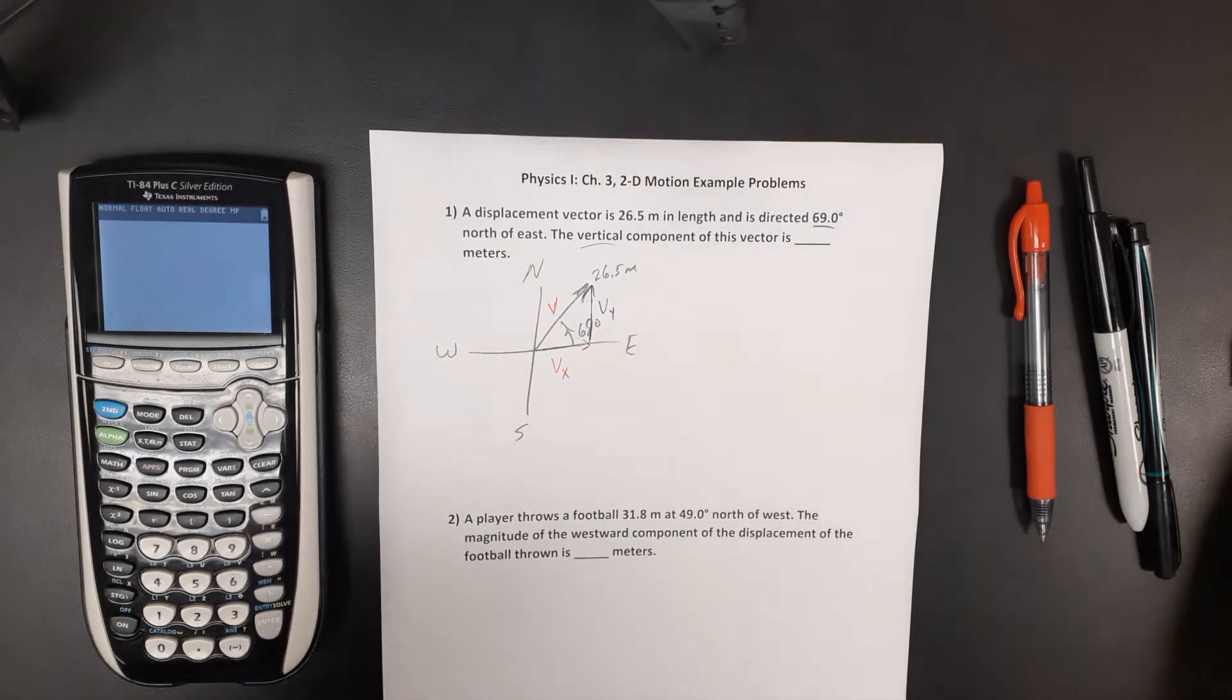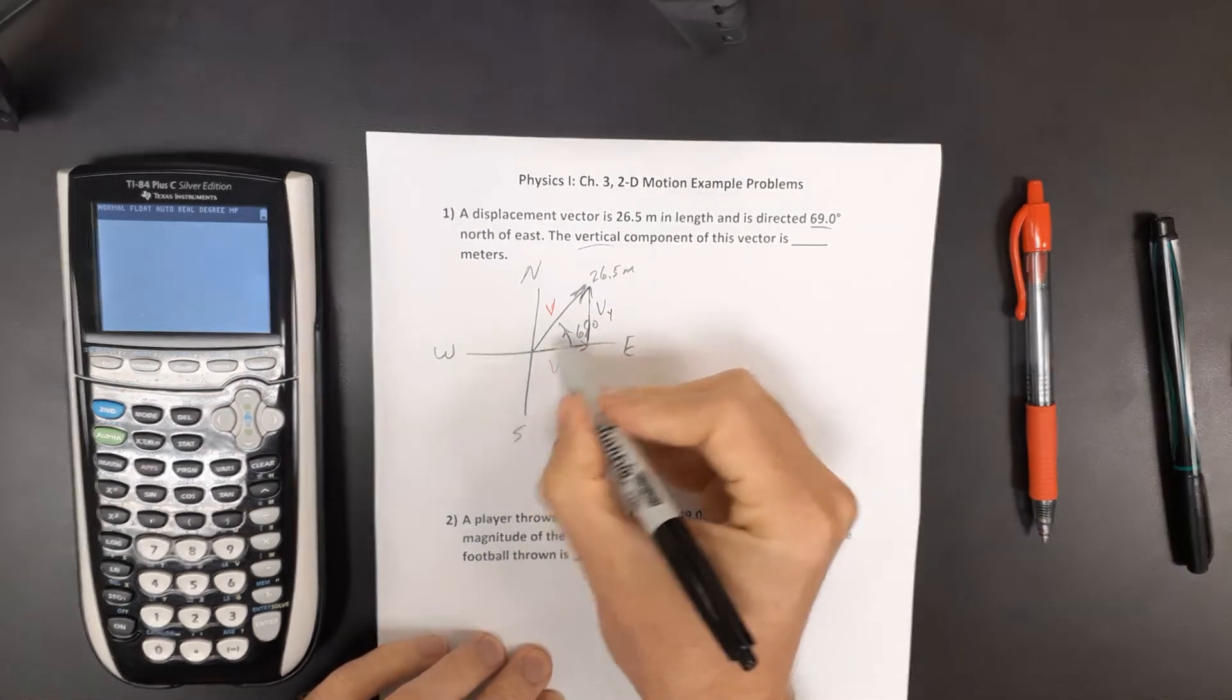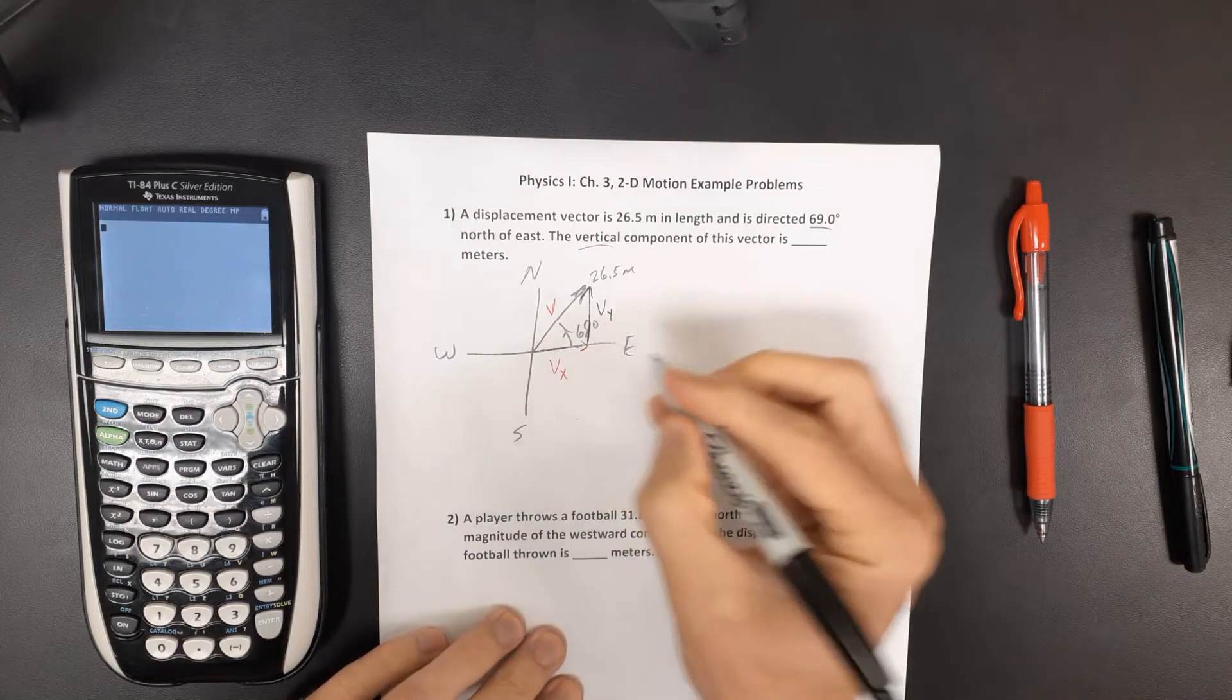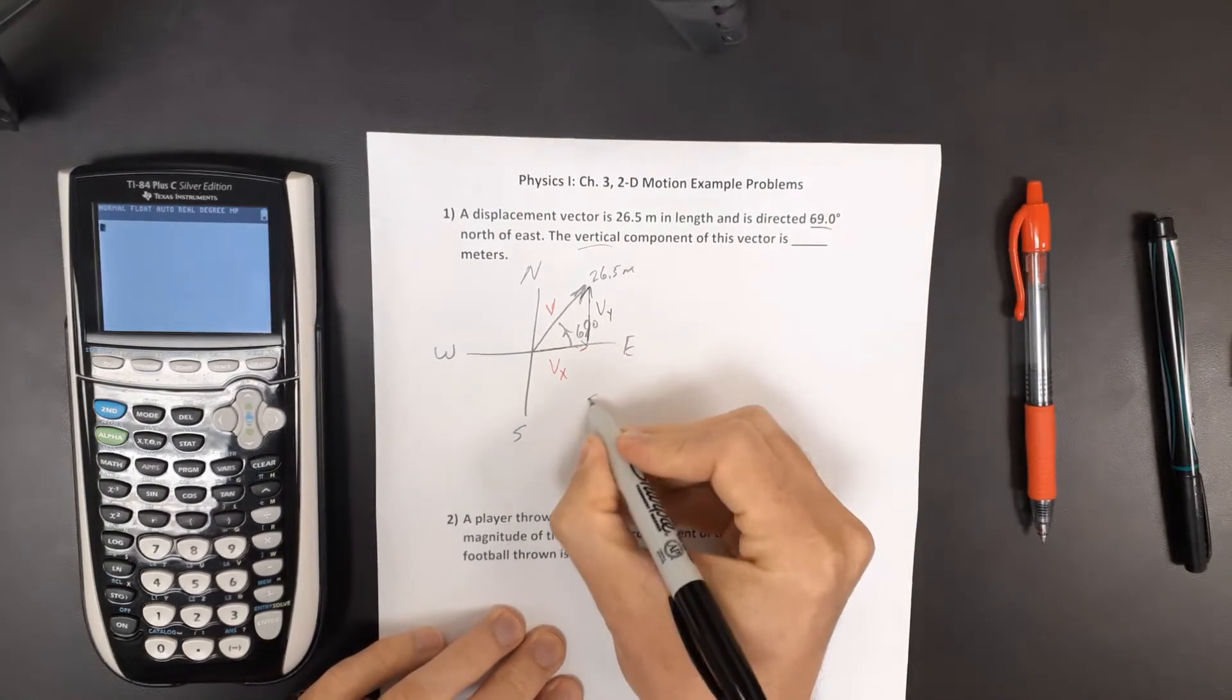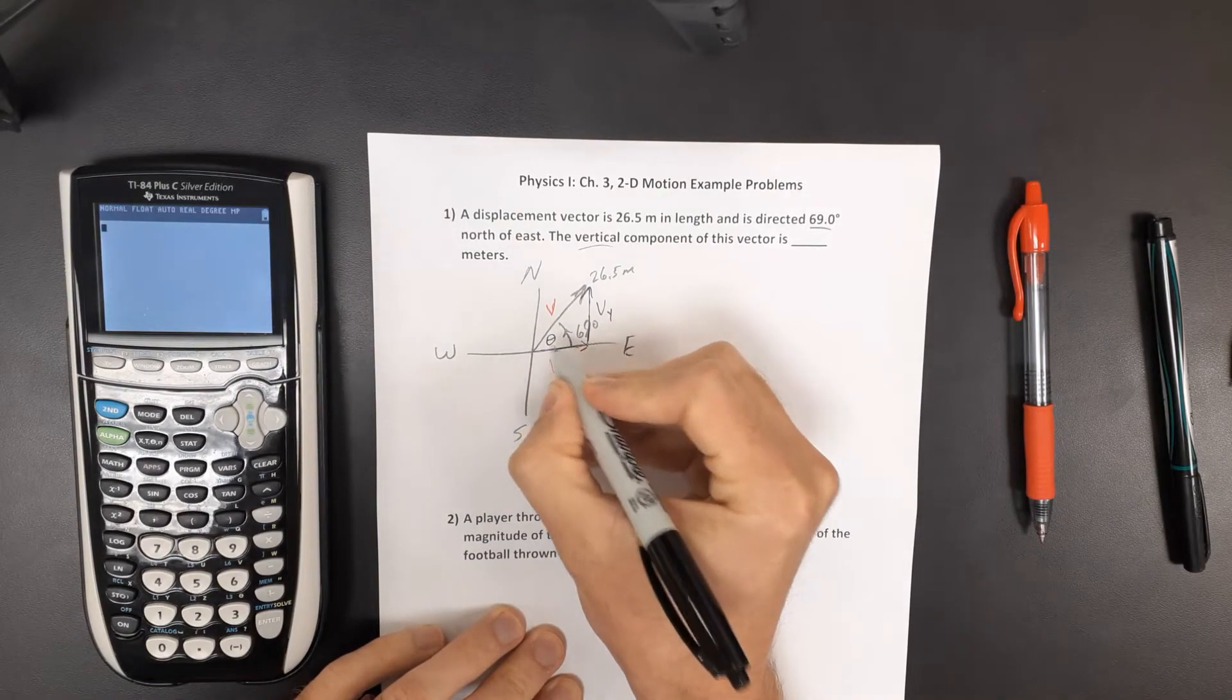And it's going to have this vertical or the y component for this vector. And that's what we want to solve for. Well this vertical component is the opposite side right here. So the sine of this angle, we'll call it theta, is going to be 69 degrees.